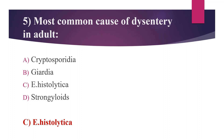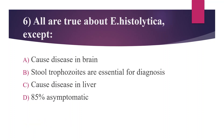Giardia lamblia has a falling leaf-like motility, which is very important. Strongyloides causes intermittent episodes of diarrhea and constipation. Bacterial dysentery-causing agents include Shigella, Campylobacter, and Vibrio parahaemolyticus. Parasitic dysentery-causing agents include Entamoeba histolytica, Schistosoma haematobium, Trichuris trichura, and Balantidium coli.